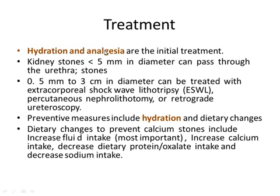Treatment: hydration and analgesia are the initial treatment. Kidney stones less than 5 mm in diameter can pass through the urethra. Stones 0.5 mm to 3 cm in diameter can be treated with extracorporeal shockwave lithotripsy (ESWL), percutaneous nephrolithotomy, or retrograde ureteroscopy. Preventive measures include hydration and dietary changes: increased fluid intake, increased calcium intake, decreased dietary protein and oxalate intake, and decreased sodium intake.